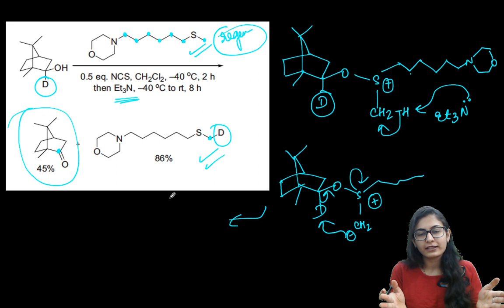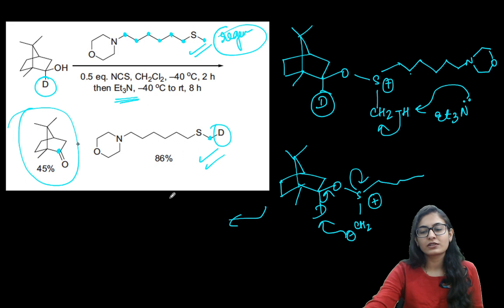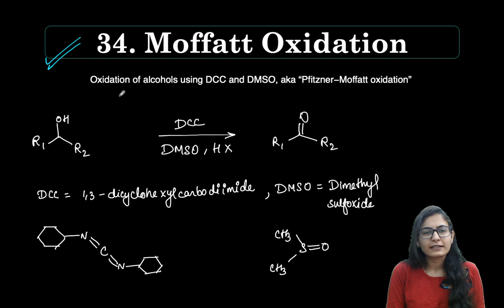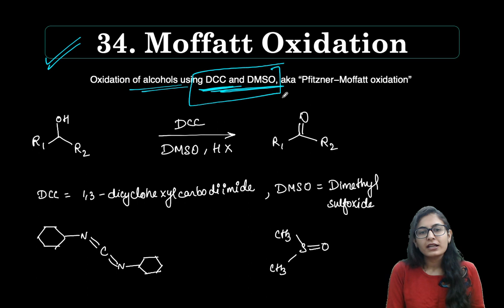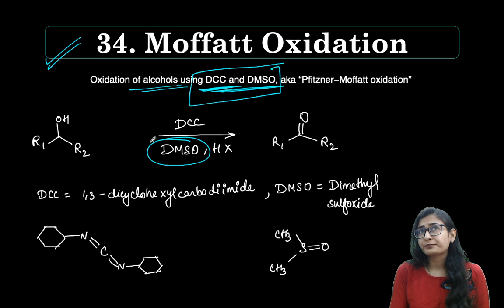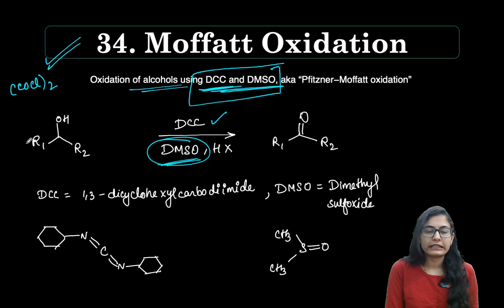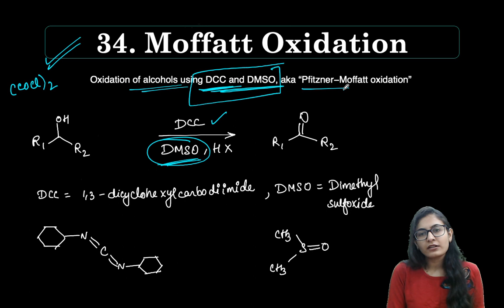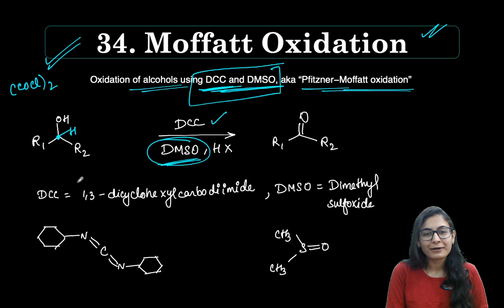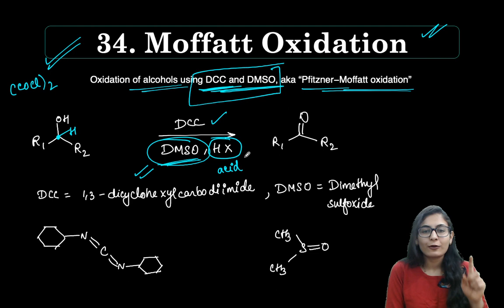Hopefully you have correlated the difference between the Swern oxidation and the Corey-Kim oxidation. Now we move to the Moffat oxidation — once again very similar mechanism. The Moffat oxidation is: oxidation of alcohols using DCC and DMSO. DMSO is common to both Moffat and Swern oxidations; the difference is that here you have DCC, whereas in Swern you have oxalyl chloride. It is also known as the Pfitzner-Moffat oxidation.